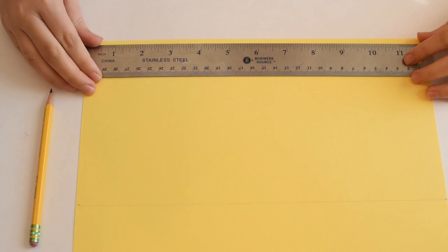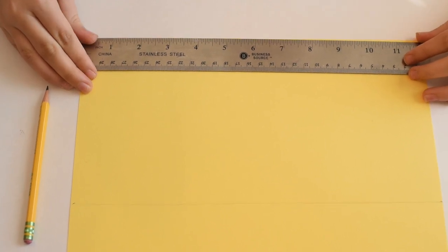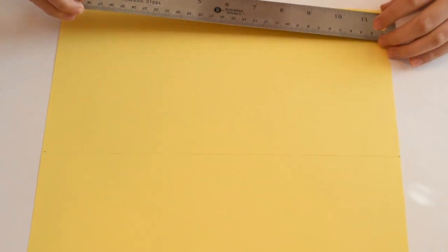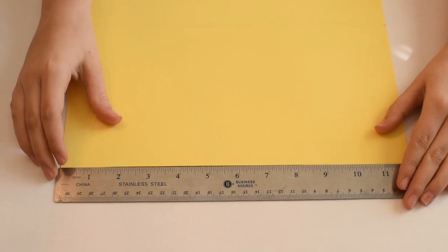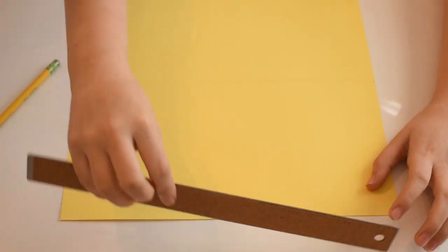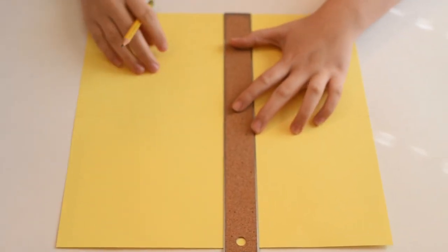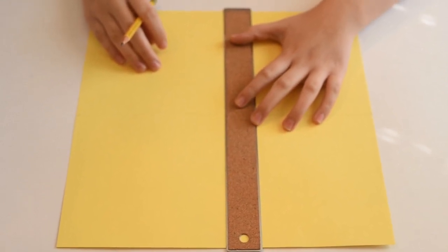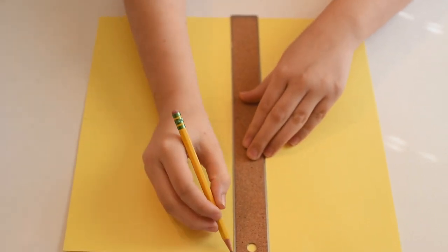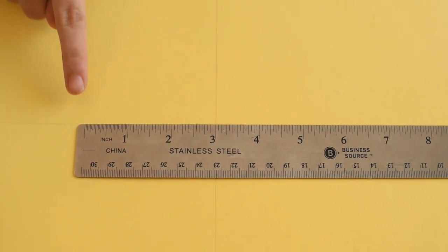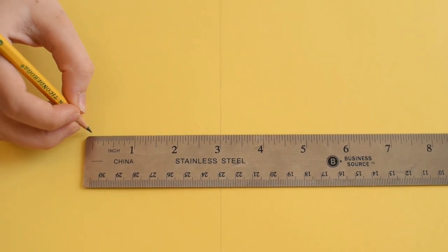Then we're going to measure in from the left at the top to the 6 inch mark, and we'll put a dot. We'll then do the same thing at the bottom of the paper. We'll measure in from the left to the 6 inch mark, put a dot, and then we'll join those two dots again with a line. Now the book tells us to draw a horizontal line that is 6 inches long and to place a dot in the middle of that line. Well, we already have a horizontal line. We're going to measure it to equal 6 inches, and the 3 inch mark is going to be that middle point.